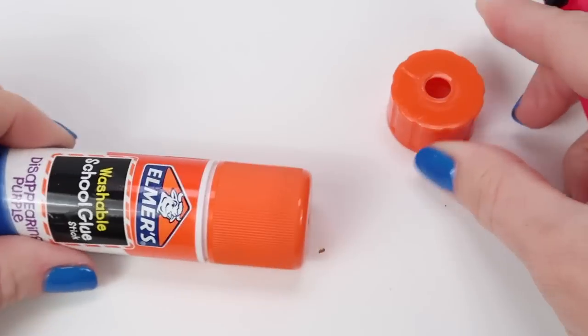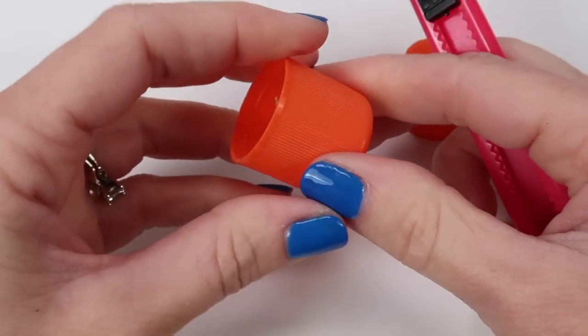You will need to use an exacto knife to cut the bottom part off, but for the top you can just pop it off.